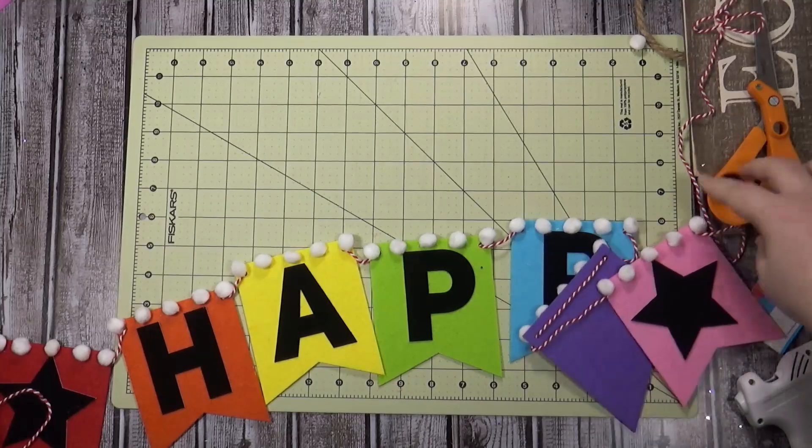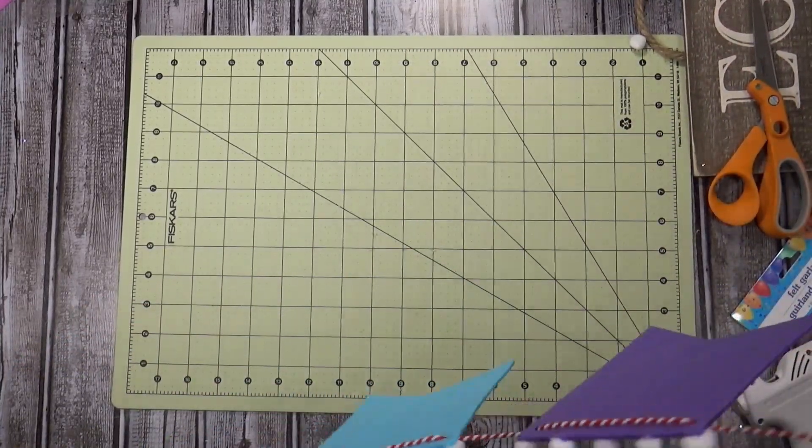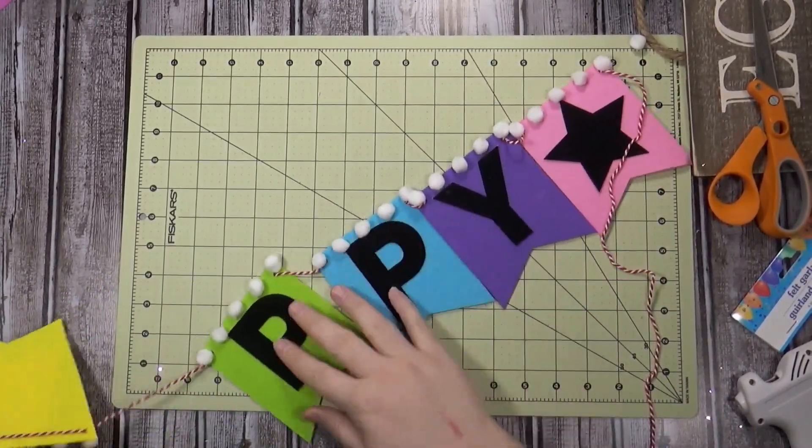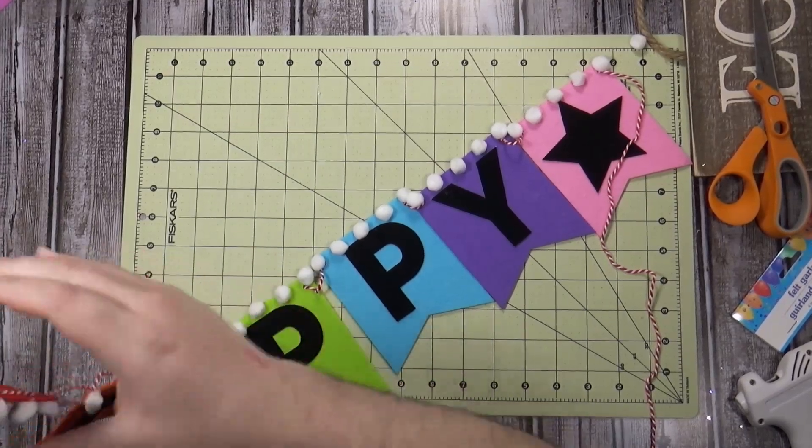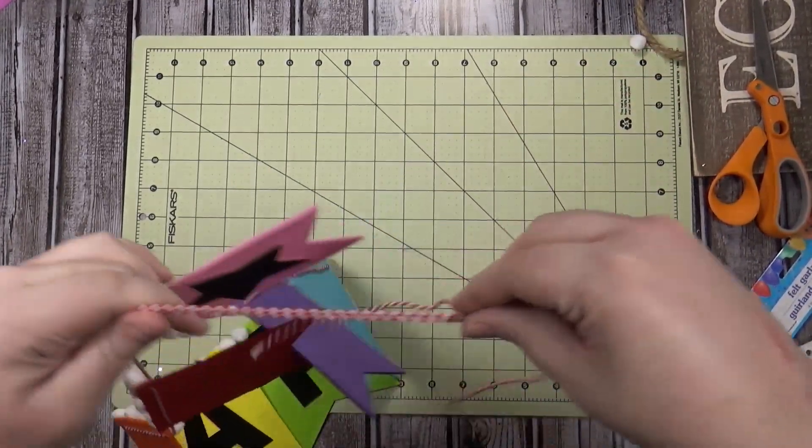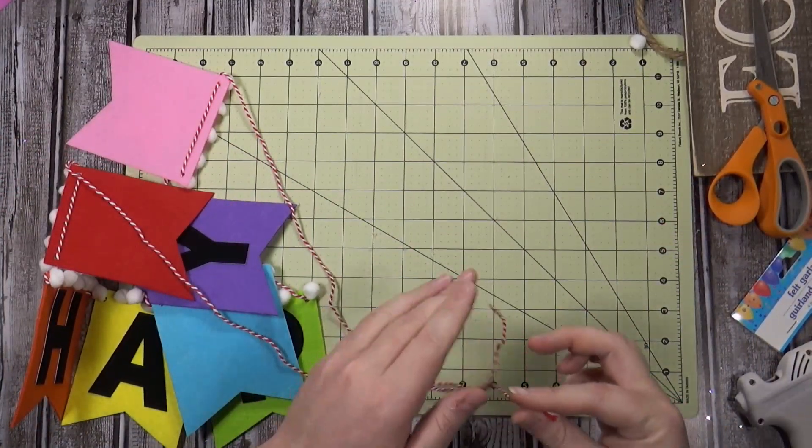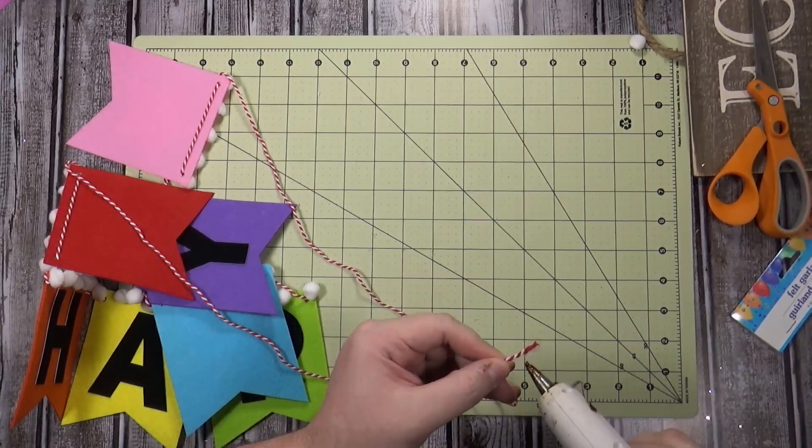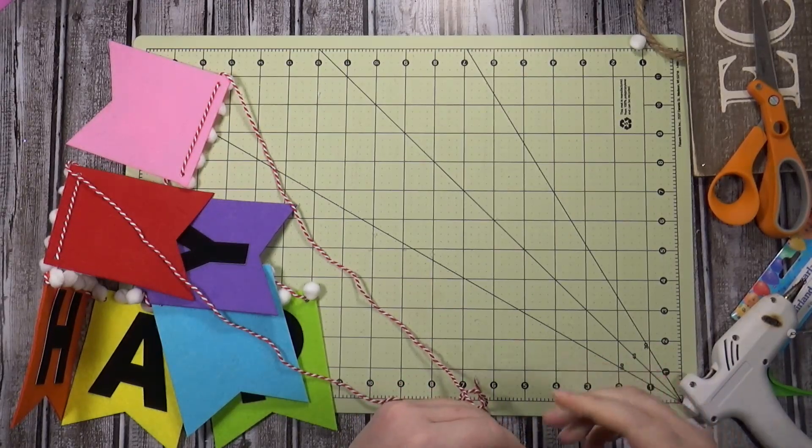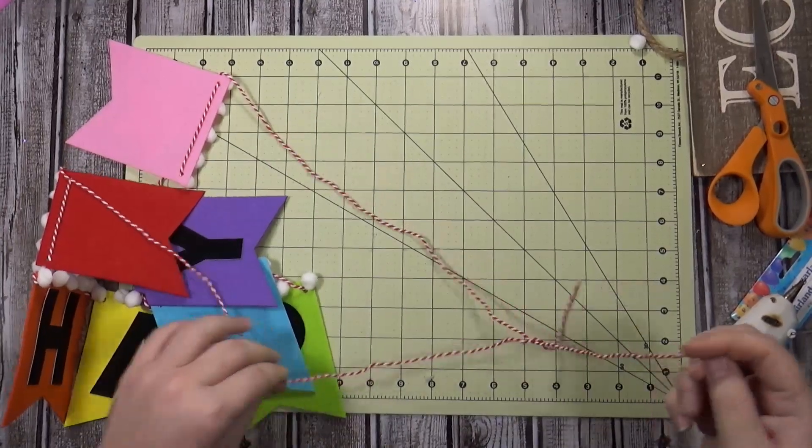I probably should have started in the middle and then attached one on each end but whatever. Here's what it would look like, it's actually pretty even. If I just move these down some more. I'm actually gonna put some glue on here too just because this does look a little unravely.